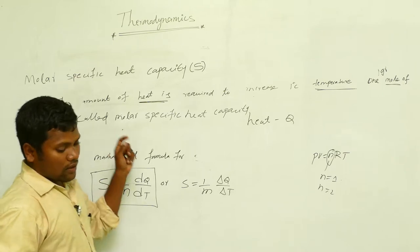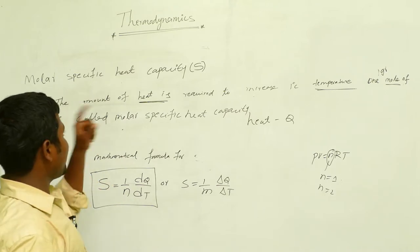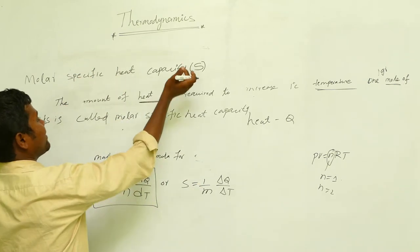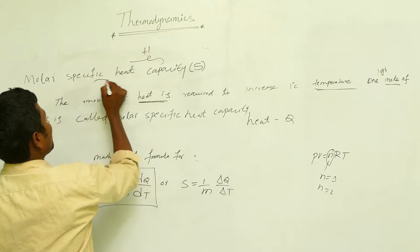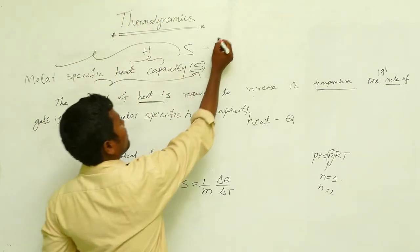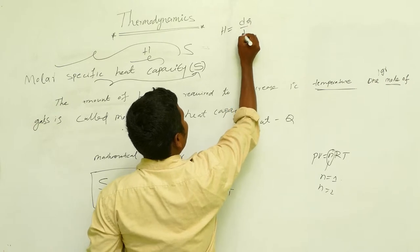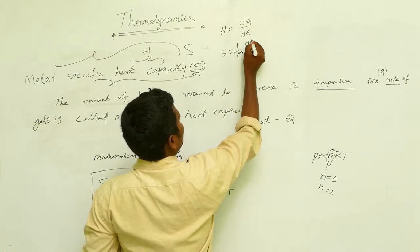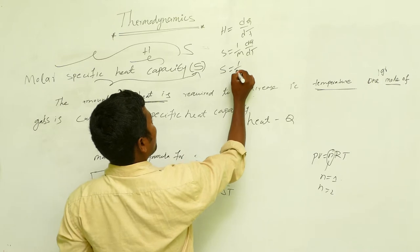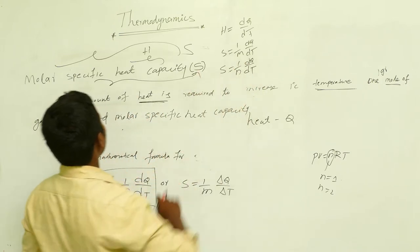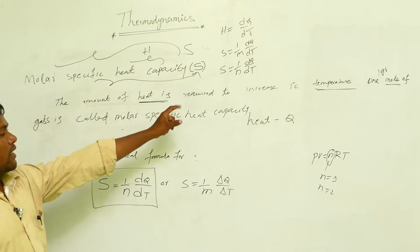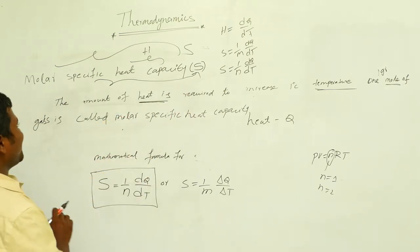Summary of the three main definitions: First, heat capacity — H = dQ/dT. Second, specific heat capacity — S = (1/m) dQ/dT. Third, molar specific heat capacity — S = (1/n) dQ/dT. These three formulas are very important.